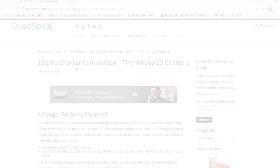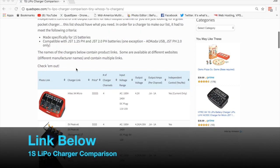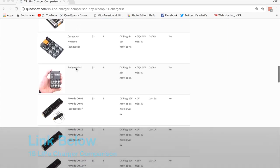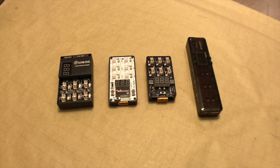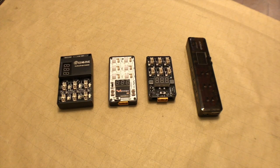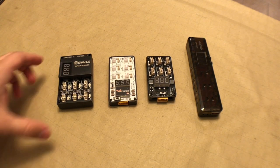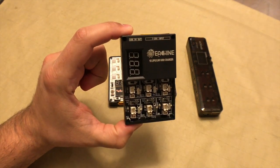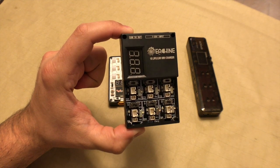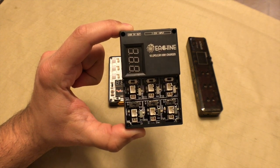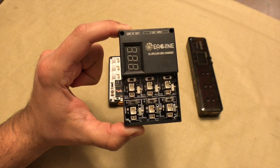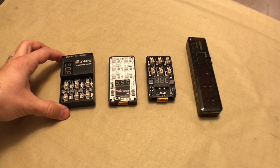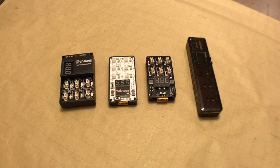If you head on over to quadspecs.com, you can check out our comparison chart of all the different 1S chargers that we found on the market today. We tried to stick with ones that are mostly portable, so if you go to some kind of tiny whoop race you don't have a hard time trying to find an AC plug to source your charger. But today we are specifically going to look at the 6-in-1 Eachine charger that's available at banggood.com. This one was sent to us for review from banggood.com, so we appreciate that.